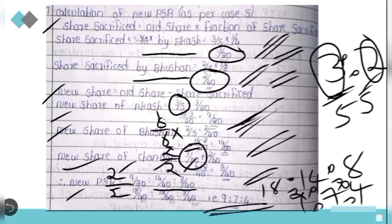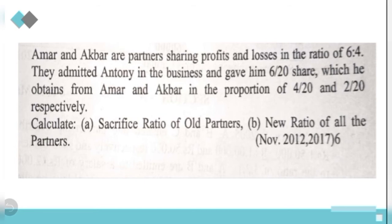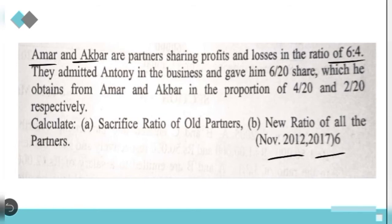That is the answer for the first question. Coming to the second question: Amar and Akbar are partners sharing profits and losses in the ratio of 6:4. They admitted Anthony in the business and gave him 6/20 share, which he obtains from Amar and Akbar in the proportion of 4/20 and 2/20 respectively.